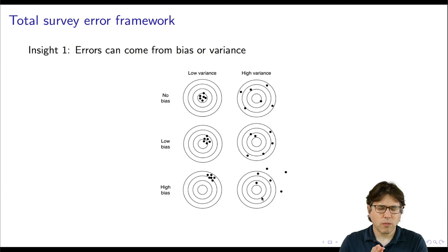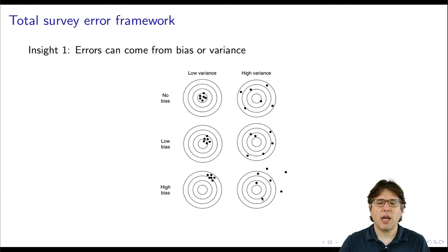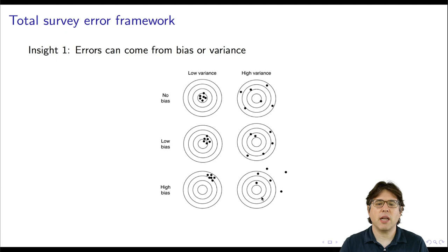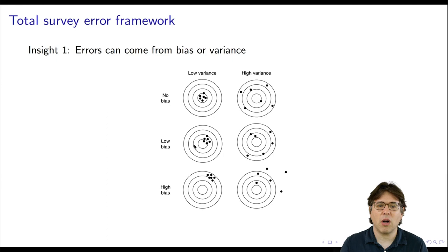When thinking about errors, consider whether they come from bias or variance. It's also important to realize that the lowest error might not come from an unbiased approach. Social scientists generally say they want an unbiased approach and then take the one with the lowest variance. But often, if you're willing to introduce a small amount of bias, you can dramatically reduce the variance and reduce your overall error. Choosing between low bias/low variance versus no bias/high variance, it's not obvious you'd always want the no-bias, high-variance approach — the small bias, small variance approach may actually put you closer to the truth more often.